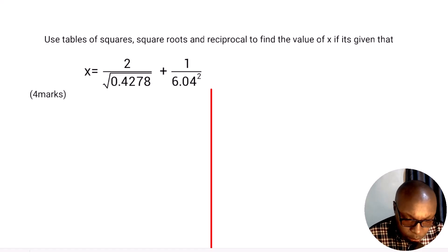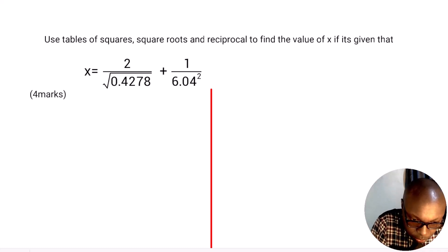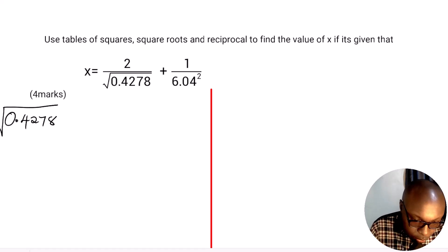To obtain the value of x, we are going to begin by getting the square root of 0.4278. We get the square root of 0.4278 from the tables of square roots.